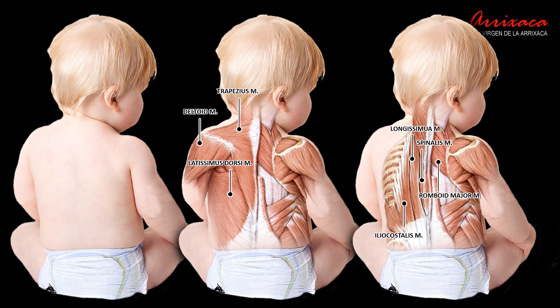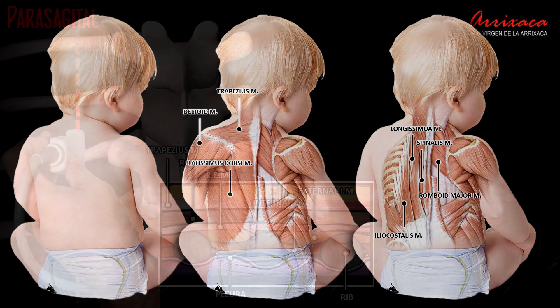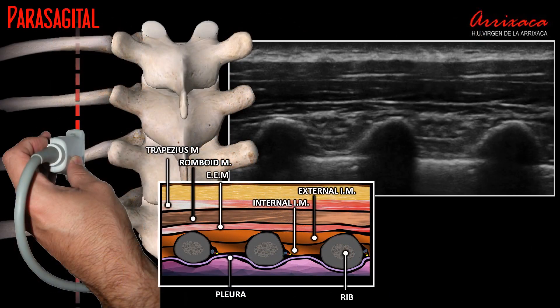Spinalis — the medial, closest to the spine component of the erector spinae — runs from the sacrum to the upper thoracic vertebrae and is primarily responsible for spine extension.